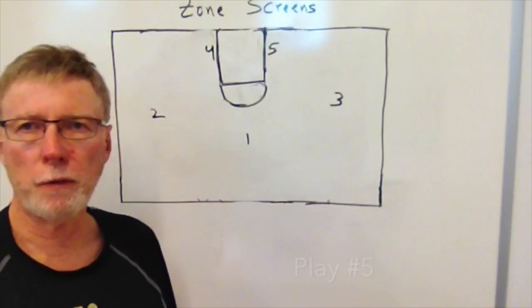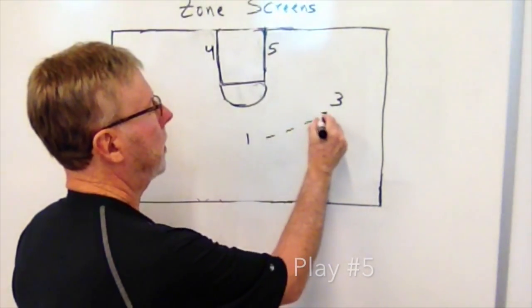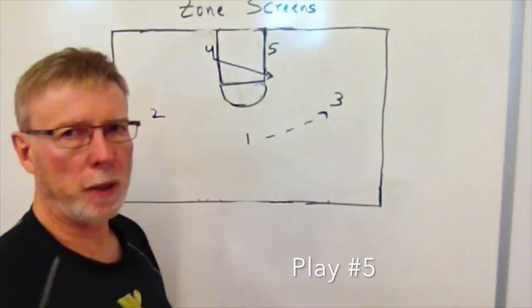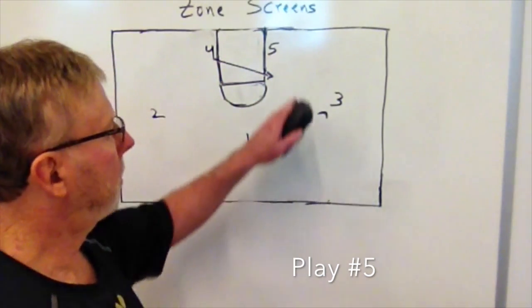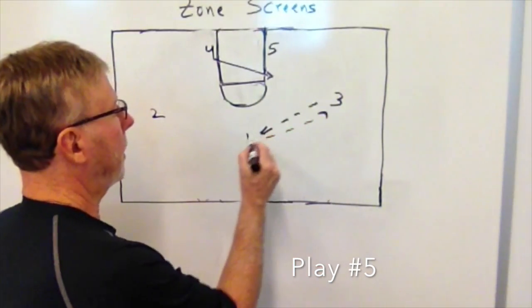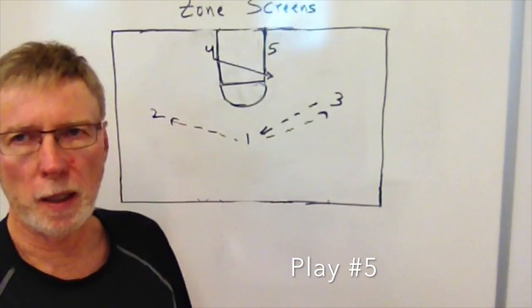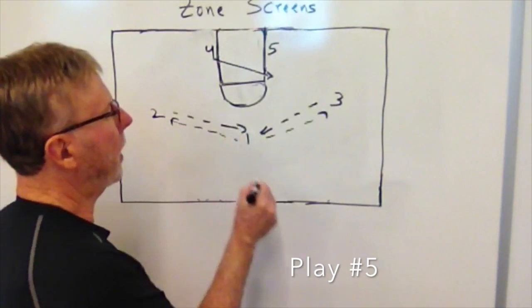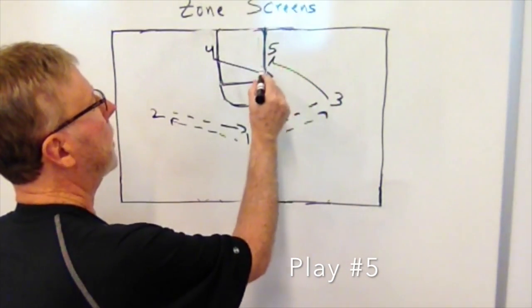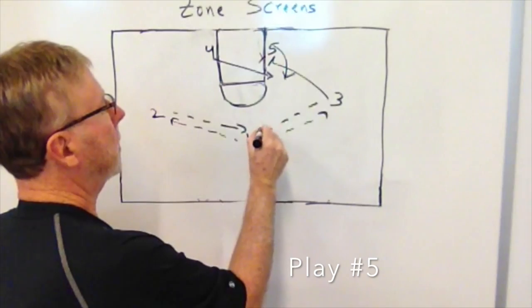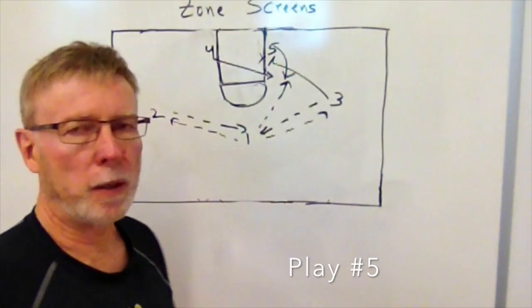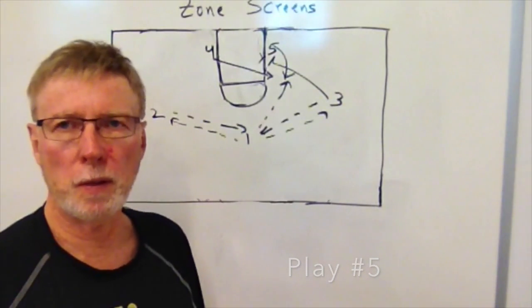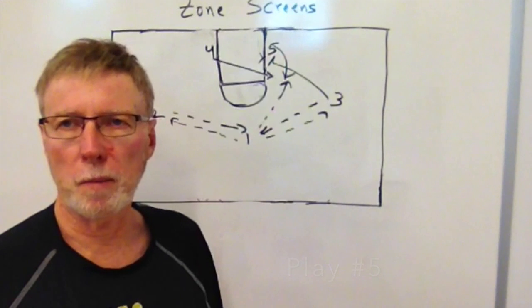Play number five looks more like our regular zone offense. We initiate a typical pass to the three man and the four man breaks up to the elbow. Instead of passing the ball there, we pass it back and reverse the ball to the weak side. We reverse it back, the three man comes down and sets a pick, the five man comes around, and we get the ball into the five man. If we've got a good shooting five man, that gives him a good opportunity to score against the zone.